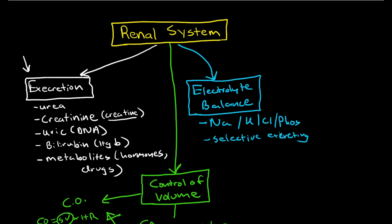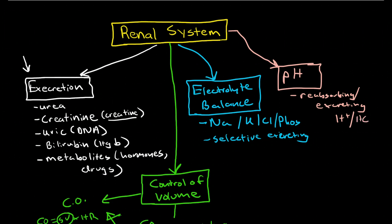Similarly, the kidneys have a central role in regulating pH. It does this similar to electrolytes by reabsorbing or excreting variable amounts of hydrogen ions versus bicarbonate ions. Again, we'll talk about this more in depth.